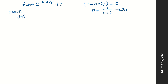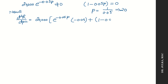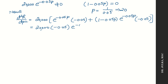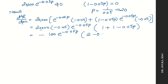Now in order to check maximum or minimum, we calculate the second derivative with respect to p. Taking 20,000 common: e raised to the power minus 0.05p as it is, times the derivative of (1 minus 0.05p) which is minus 0.05, plus (1 minus 0.05p) as it is times the derivative of e raised to the power minus 0.05p, which is e raised to the power minus 0.05p into minus 0.05. Taking minus 0.05 into e raised to the power minus 0.05p common, after calculation we get minus 100 into e raised to the power minus 0.05p into (2 minus 0.05p).